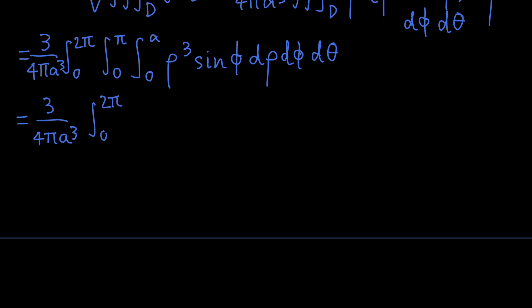So this goes from 0 to 2 pi. We have the same limits. And simplifying this a bit, we have rho to the 4th over 4. We can move the sine phi out front, giving us sine phi d-phi directly, and then d-theta.